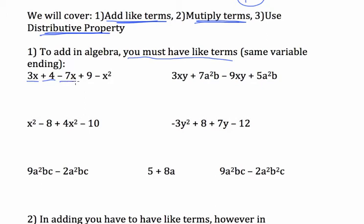So negative 7x, positive 9, negative x². Notice how I'm saying negative x² instead of minus x². I think of this, the sign, as going with the number. Now, in order to add the terms together, you have to have the exact same variable ending. So I'm going to start with this one. That's the only one that ends with an x². So we'll put that one. Then the ones that end with x can be added, or combined.